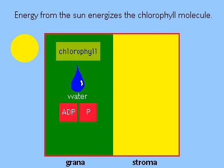Each chloroplast contains chlorophyll and membrane structures called stroma and grana that work according to the two phases of photosynthesis: light absorption and carbon fixation.